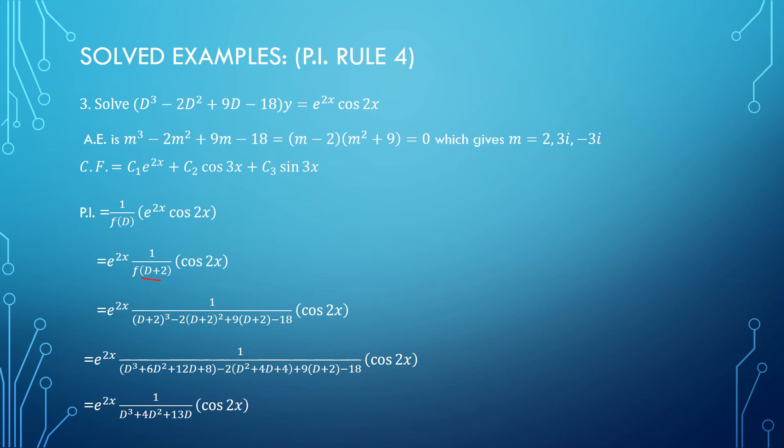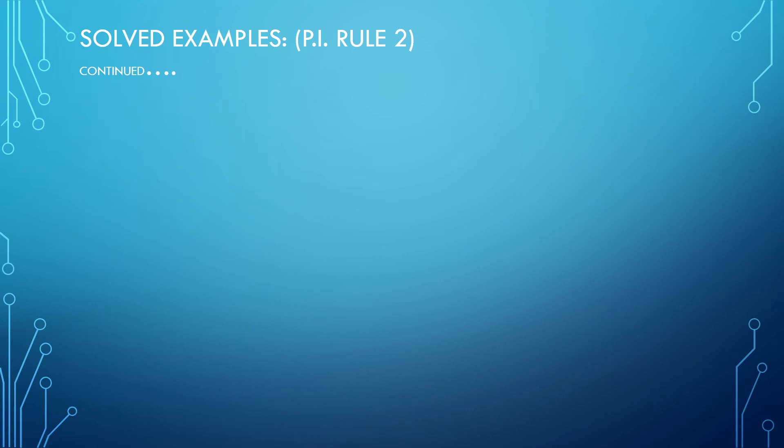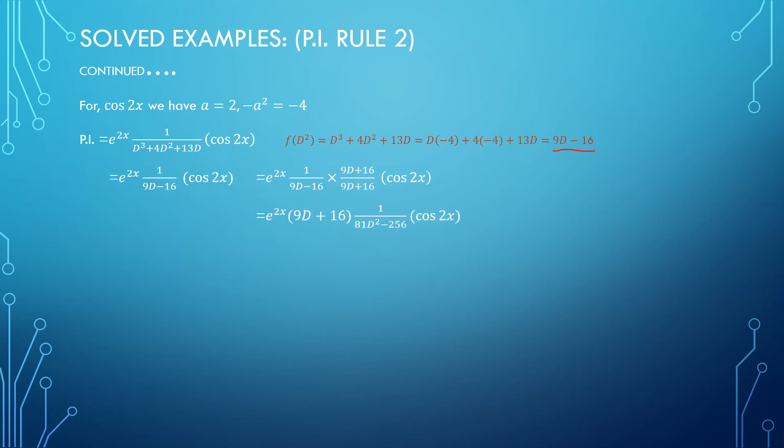Let us simplify the things. We get a polynomial d³ plus 4d² plus... cos 2x means a is 2, minus a² is minus 4. If I replace d² by minus 4, I am going to get 9d minus 16. Again, by adjustment we can apply Rule 2 here and solve it to get the particular integral final form.